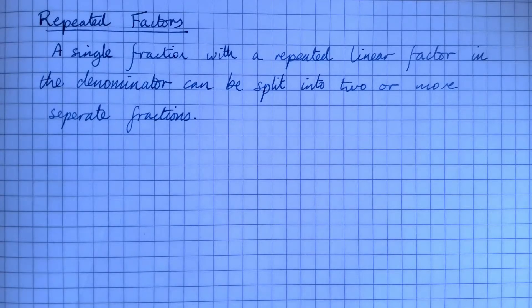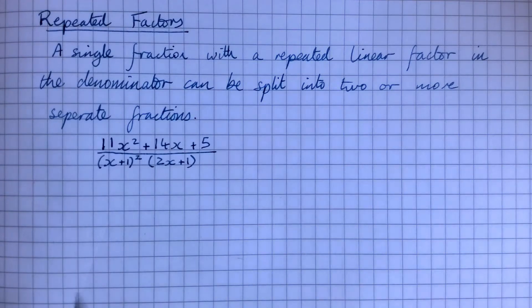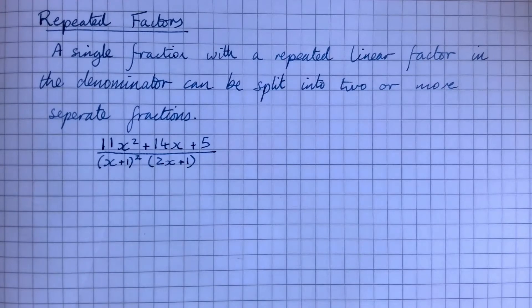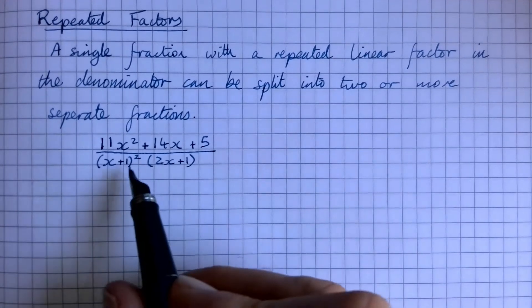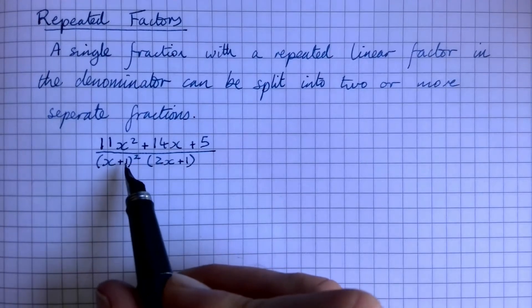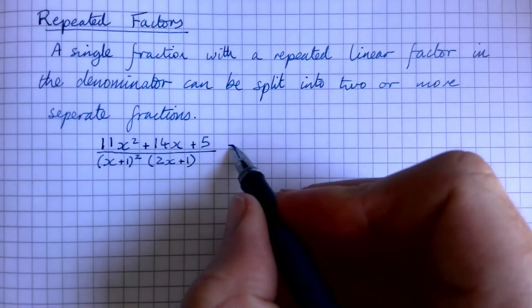Right then, we've got this statement here: repeated factors. A single fraction with a repeated linear factor in the denominator can be split into two or more separate fractions. So what is a repeated linear factor? Have a look at this. Here's our fraction and our repeated linear factor is our squaring of that bracket, so that's x plus one times x plus one.